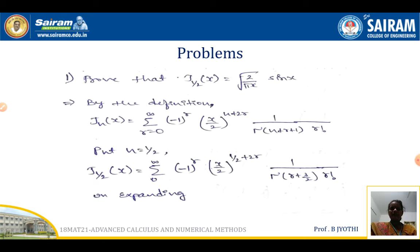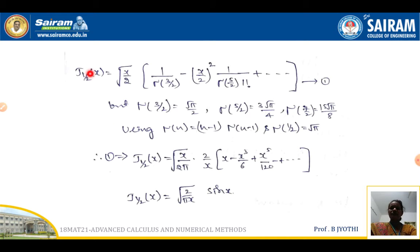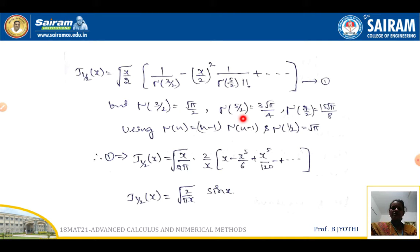On expanding, we get J₁/₂(x) = √(x/2) · 1/Γ(3/2) − (x/2)² · 1/[Γ(5/2) · 1!] + etc. Call this equation number 1. Now, Γ(3/2) = √π/2, Γ(5/2) = 3√π/4, and Γ(7/2) = 15√π/8, using the result Γ(n) = (n−1)·Γ(n−1) and Γ(1/2) = √π.